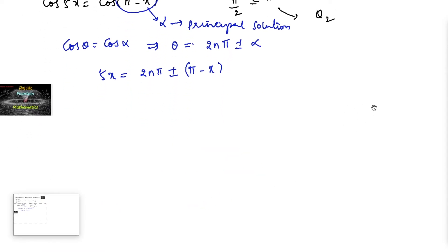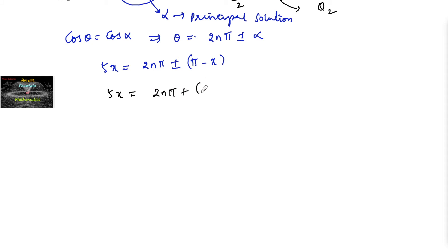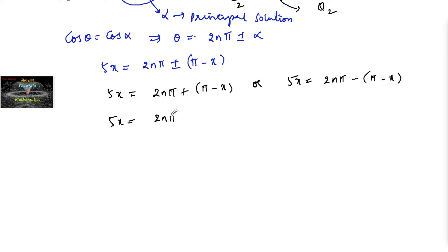This gives us two cases: 5x = 2nπ + (π - x), or 5x = 2nπ - (π - x), which can be written as 5x = 2nπ + π - x, or 5x = 2nπ - π + x.